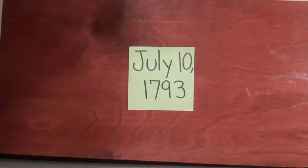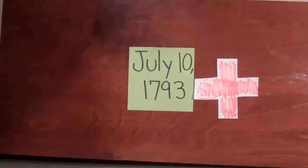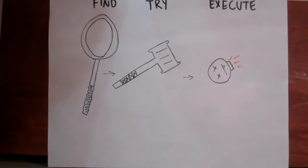On July 10, 1793, the ironically named Committee of Public Safety was founded. This committee was responsible for finding, trying, and executing those against the Republic.